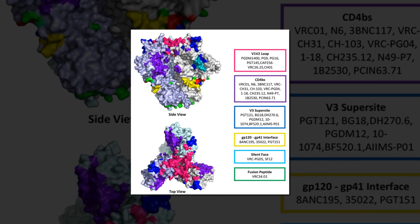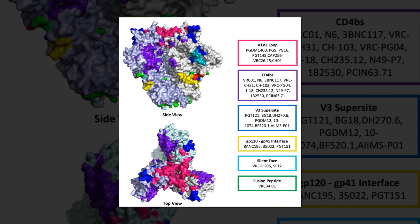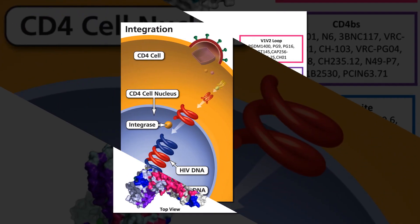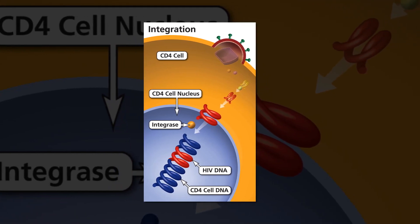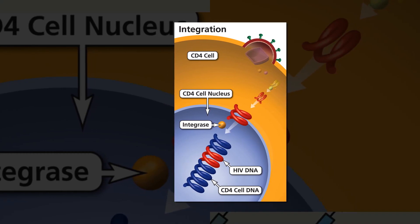So-called broadly neutralizing antibodies, BN-ABS, can prevent HIV-1 infection. Researchers are trying to induce such BN-ABS through vaccination in humans. However, this has proven to be extremely difficult.